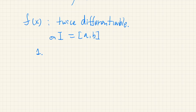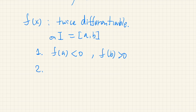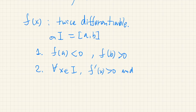Another condition: f of a is negative and f of b is positive. And second, for all x in the interval, f prime of x is positive — so it's a monotone increasing function — and the second derivative is also positive, meaning it's a convex function.